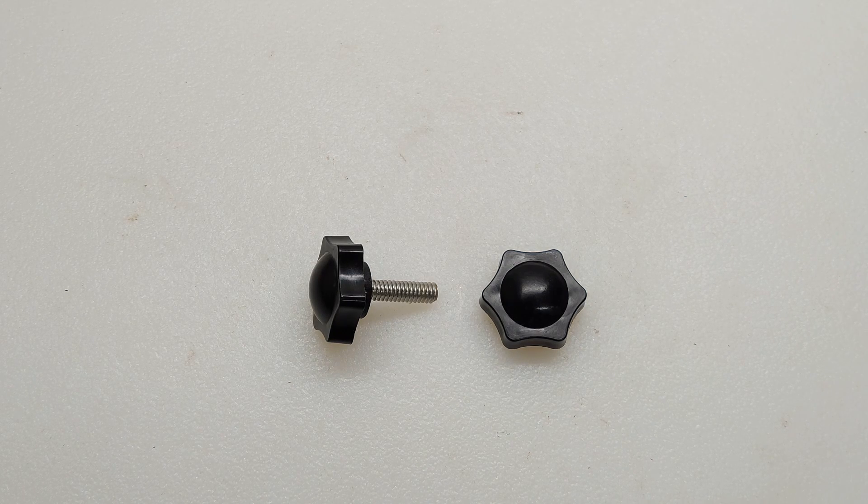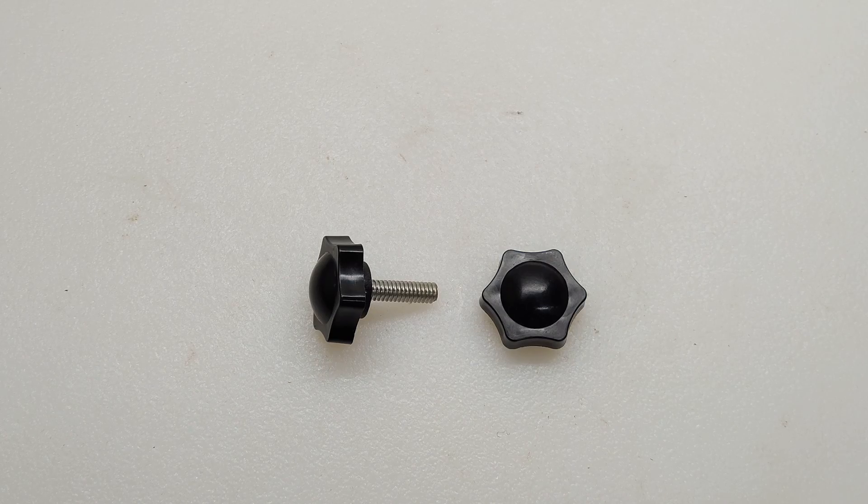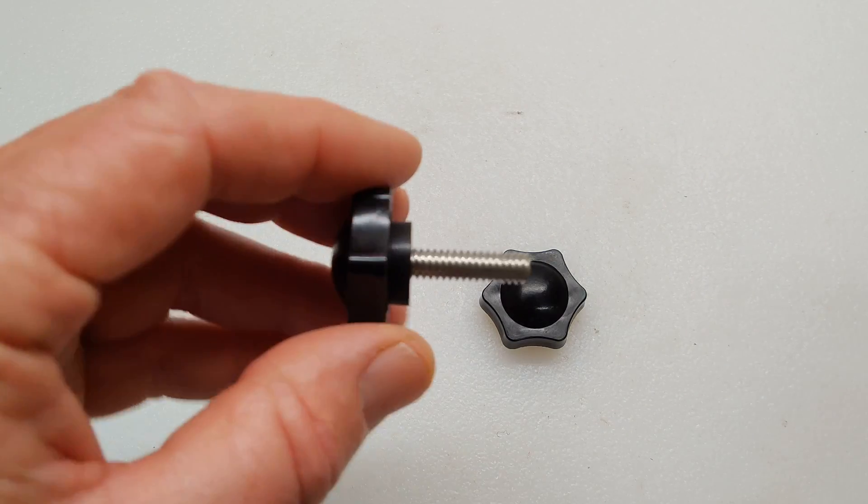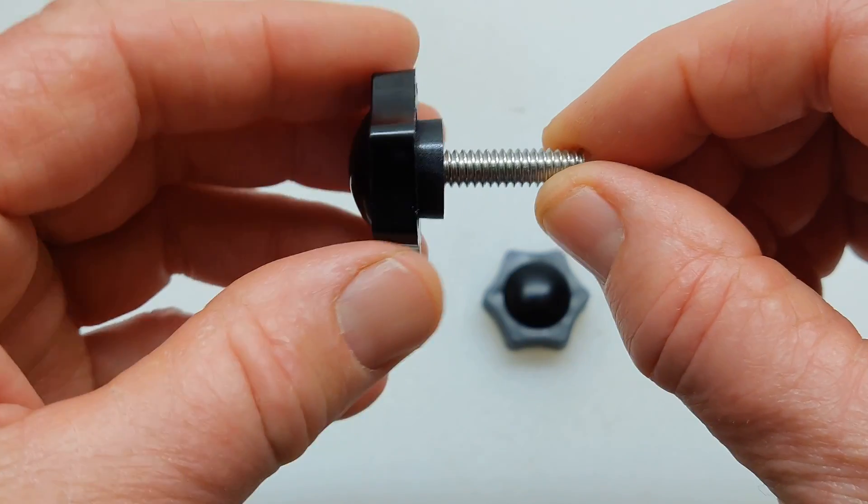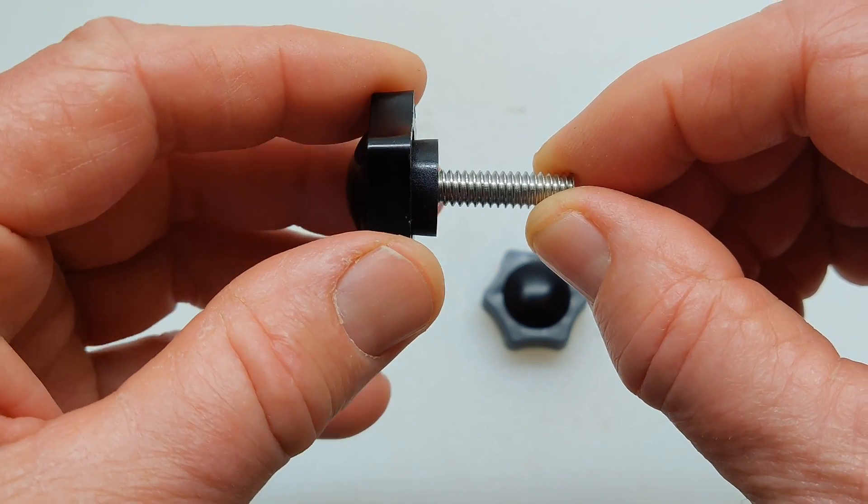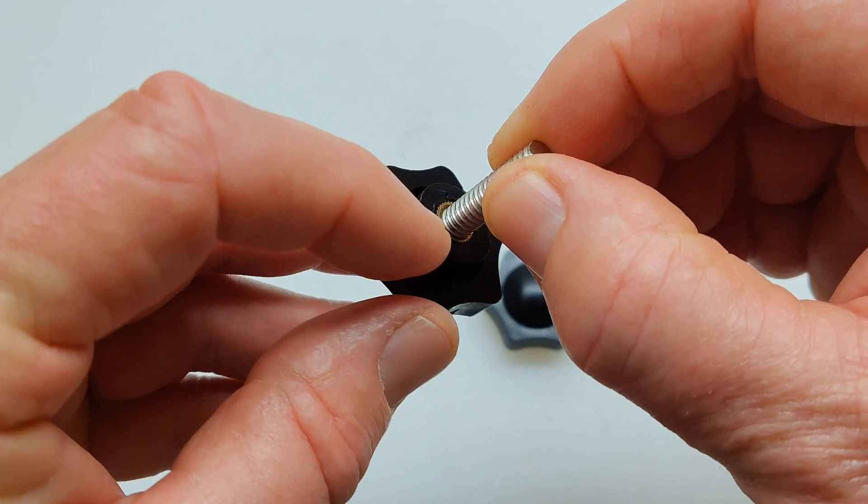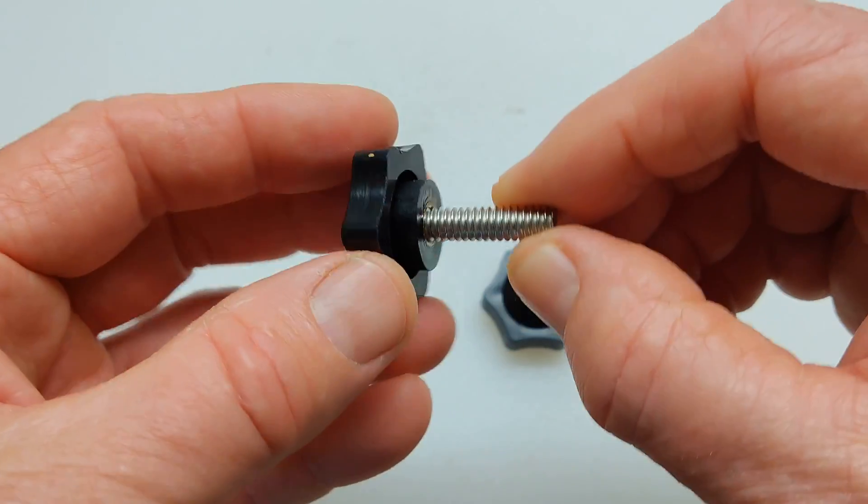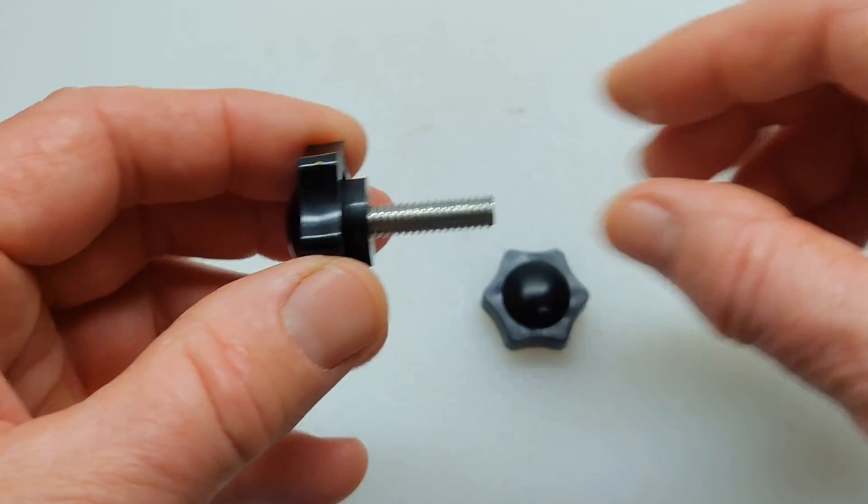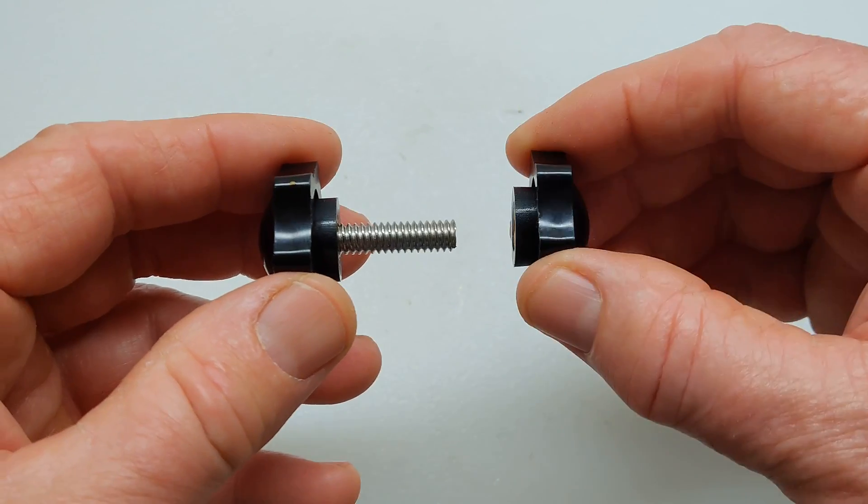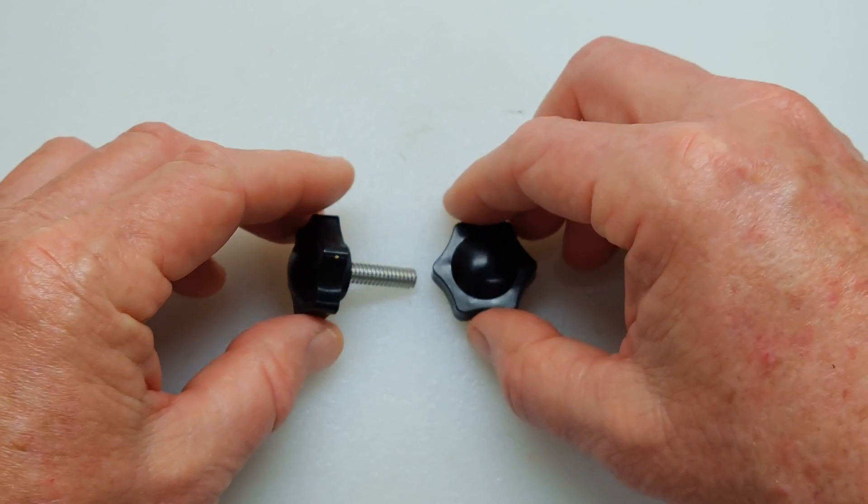This is what I finally came up with for the thumb screw rotational stops. The length of the 1 quarter by 20 section turned out to be 1 and 1 eighth inches in length, and then I put a little bit of epoxy in one of the knobs to hold it tight. That way I only have to tighten one of the knobs instead of two.